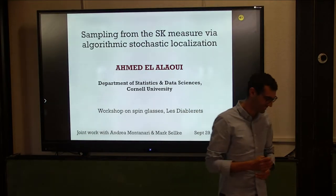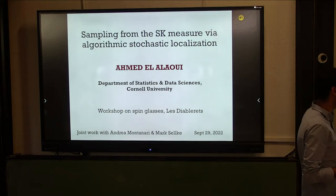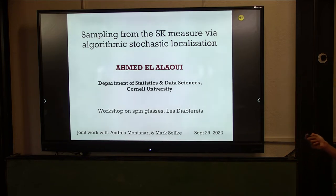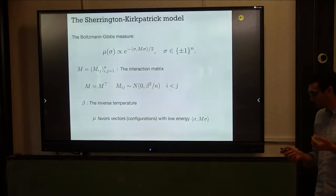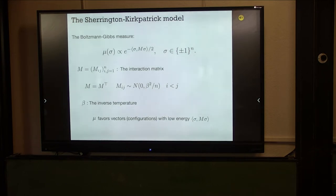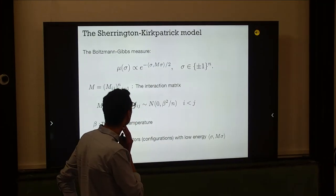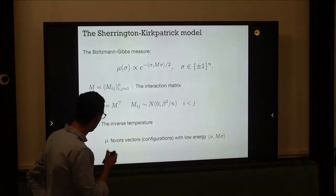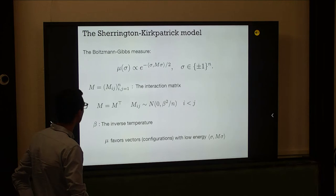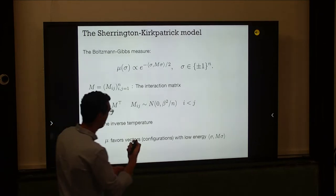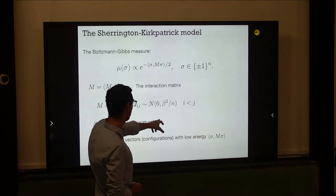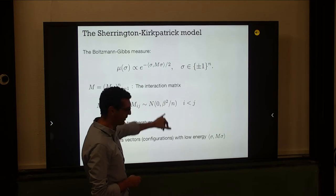Thank you to the organizers for this conference. This talk is about sampling, and we're going to discuss the SK model. Andrea talked about optimization, and the next question in this program is about sampling. So can we do this for the SK model? This is the SK model — the matrix M has Gaussian entries up to symmetry, and beta is the curvature parameter.